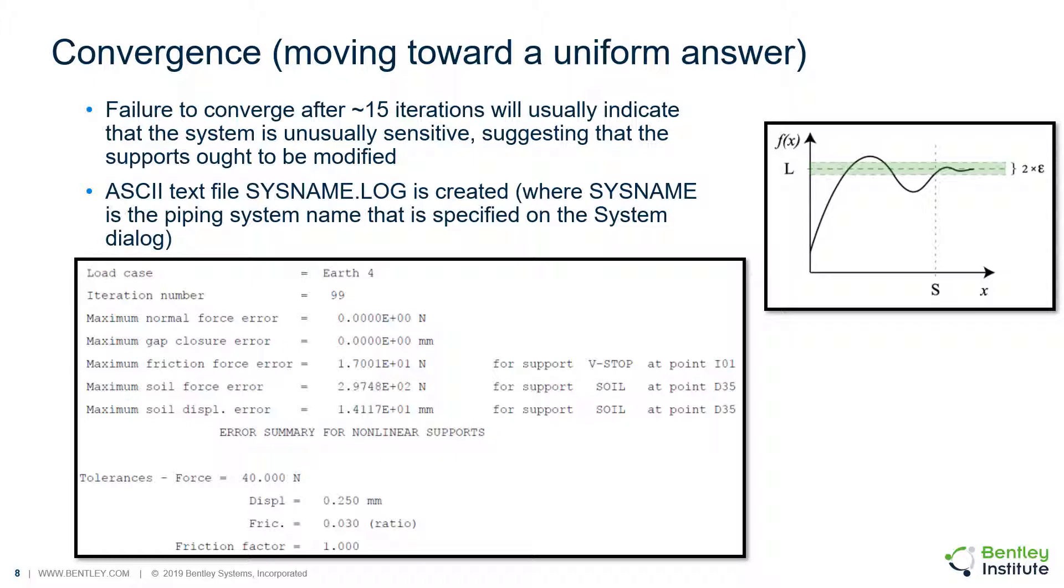Failure to converge after 15 iterations will usually indicate that the system is unusually sensitive in some respect. So, in this event, the system model should be checked for proper definition, including support locations, and that the convergence tolerances are appropriate for the magnitude of the force and displacements being calculated.